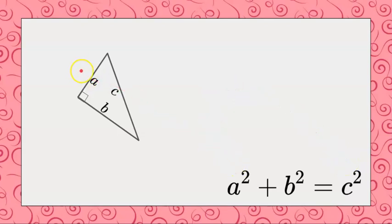When we square this side, that means when we know the numerical value for a, we do a times a, or a squared. Same thing with b squared. When we find a squared, we add it to b squared, and it will equal c squared.